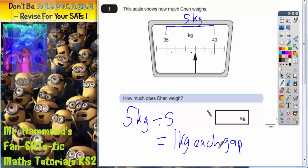But this as I say is a very easy one. So we're just going up in 1 kilogram. We're on 35 kilograms here, this mark must be 36, this mark 37, and this mark which is the one we're interested in must be 38 kilograms.